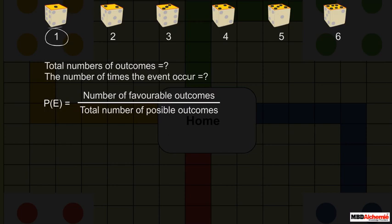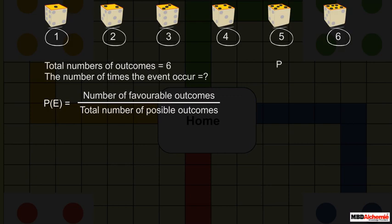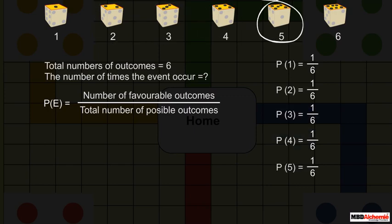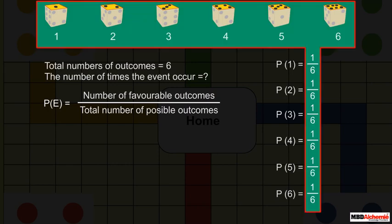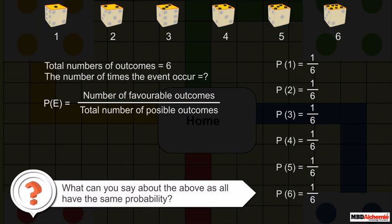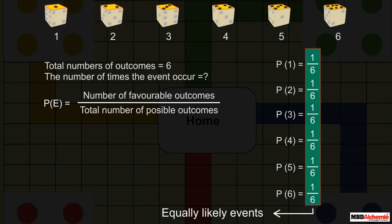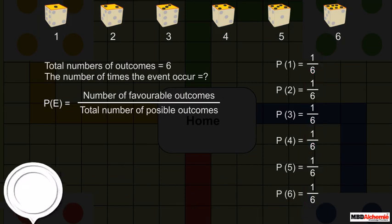There is only one way of getting a number 1, and the total possible outcomes are 6. So the probability of getting a number 1 on one throw of a dice is 1 upon 6. Since there is only one way of getting each number individually, the probability of getting a number 2, 3, 4, 5, and 6 would be the same — 1 upon 6. As all have the same probability, these are all equally likely events.